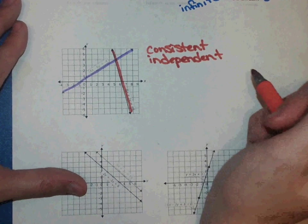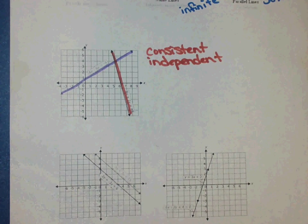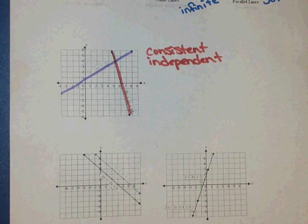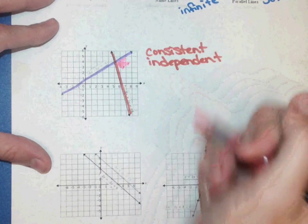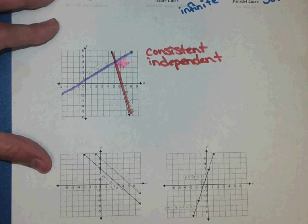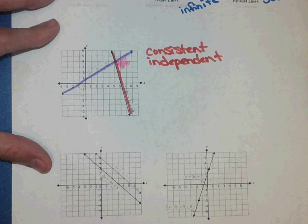Now if we were asked to find the solution, that means what time, what day do they meet to go out to dinner or whatever it may be. That solution is that point right there. And so all we have to do is find the ordered pair. So how do I do that?